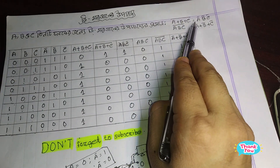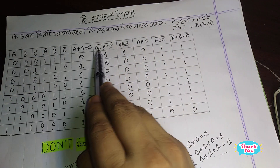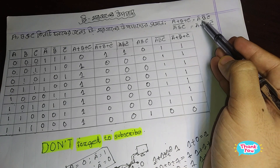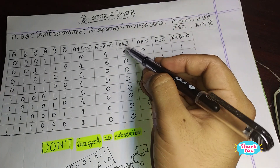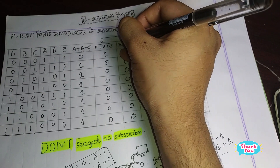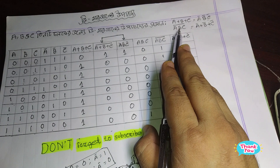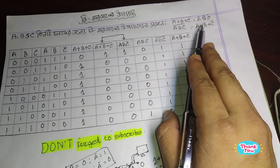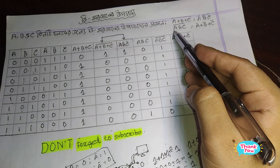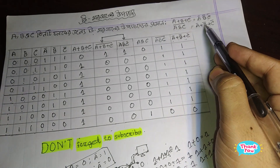A prime dot B prime dot C prime is the same thing, so we can see that A plus B plus C whole prime equals A prime dot B prime dot C prime, which equals A prime plus B prime plus C prime. This is De Morgan's theorem.